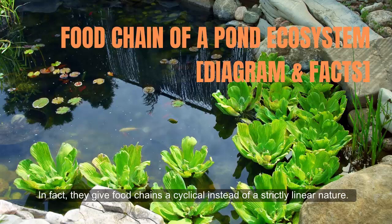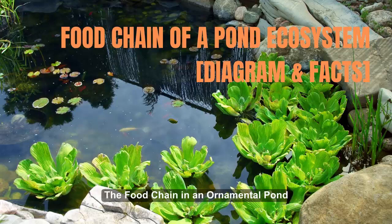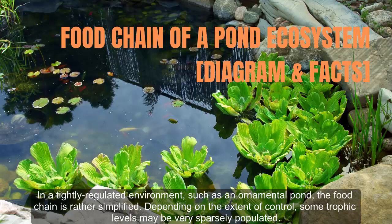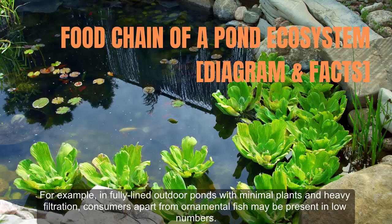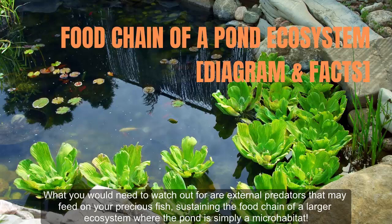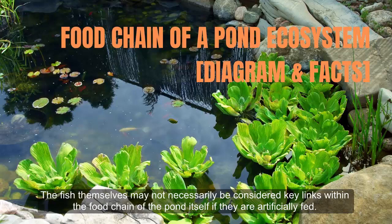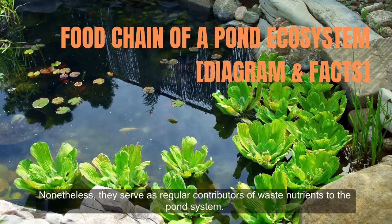In a tightly regulated environment such as an ornamental pond, the food chain is rather simplified. Depending on the extent of control, some trophic levels may be very sparsely populated. For example, in fully lined outdoor ponds with minimal plants and heavy filtration, consumers apart from ornamental fish may be present in low numbers. What you would need to watch out for are external predators that may feed on your precious fish, sustaining the food chain of a larger ecosystem where the pond is simply a micro habitat. The fish themselves may not necessarily be considered key links within the food chain of the pond if they are artificially fed. Nonetheless, they serve as regular contributors of waste nutrients to the pond system.